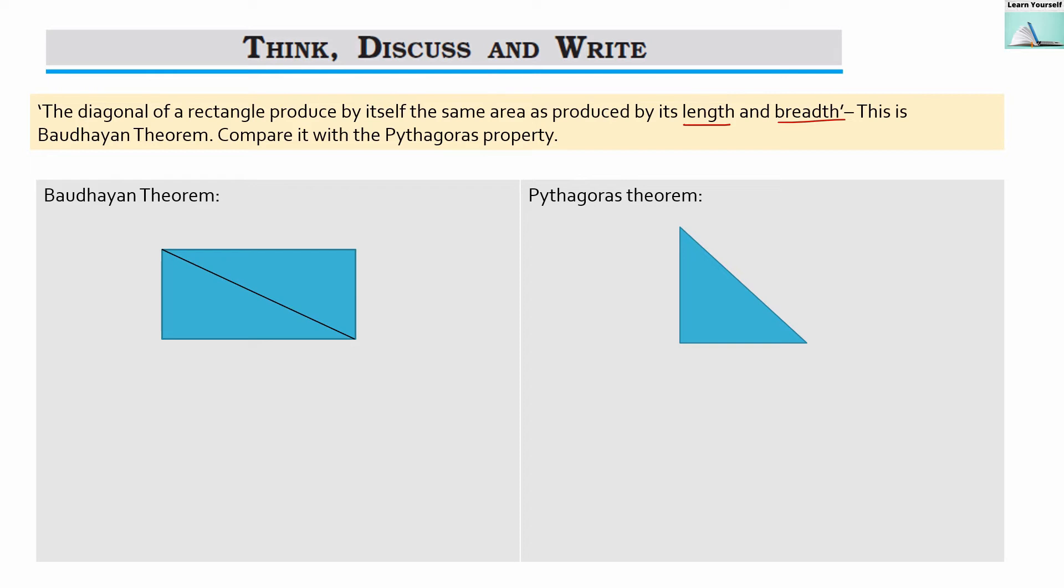So let us first understand the Baudhayan theorem and it is with respect to rectangle. So here this is our rectangle that A, B, C and D.